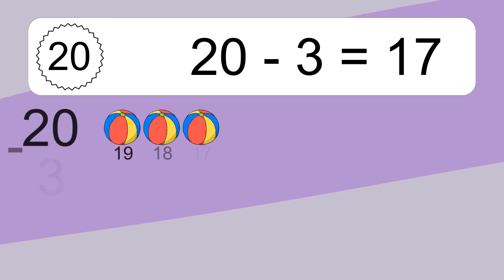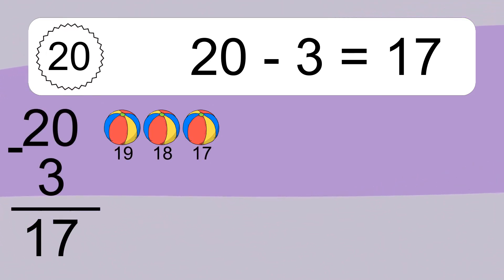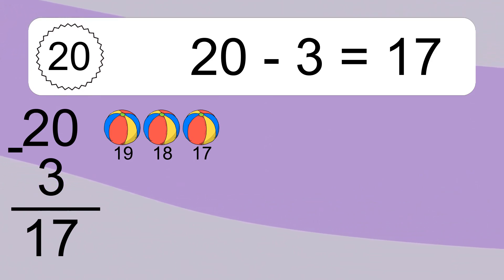20 minus 3 equals what? 20 minus 3 equals 17. Let's count it: 19, 18, 17.